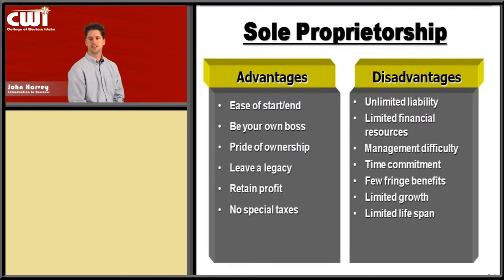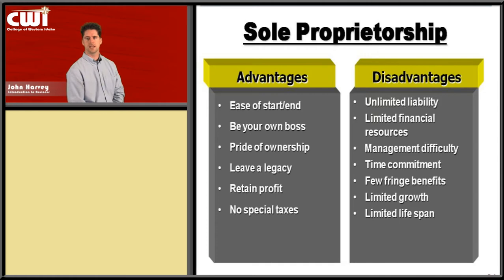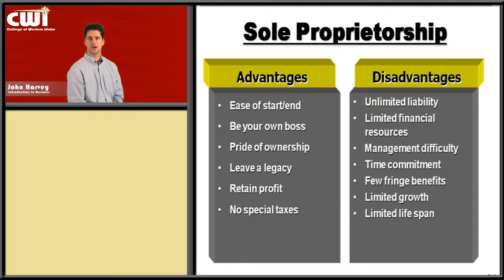The most common form of business is the sole proprietorship. Some of the advantages are that it's easy to get started, you're your own boss, and you have ownership of it. A sole proprietor is literally when somebody just says they're going to start a business — they rent a storefront, buy product, and open it up for sale. The disadvantages include liability: you yourself are liable for everything. If somebody trips and hurts themselves or someone chokes on your product, you and your personal assets are responsible.